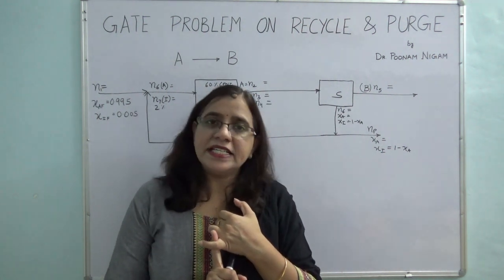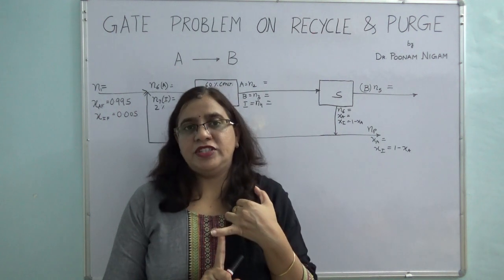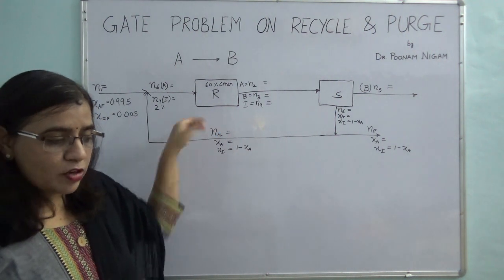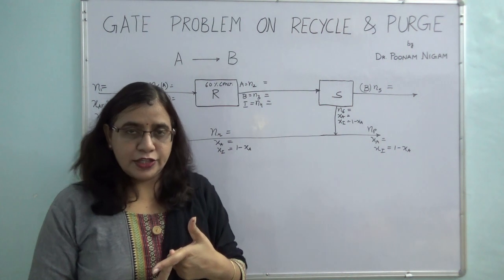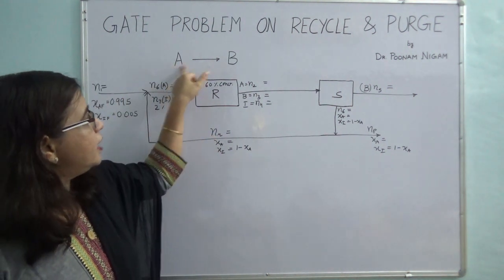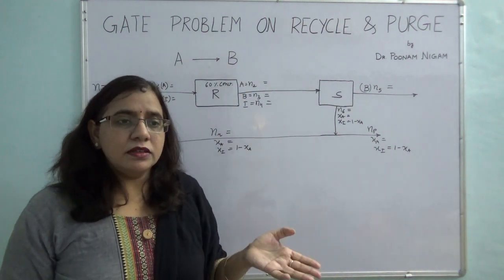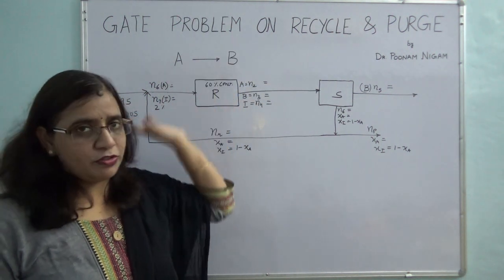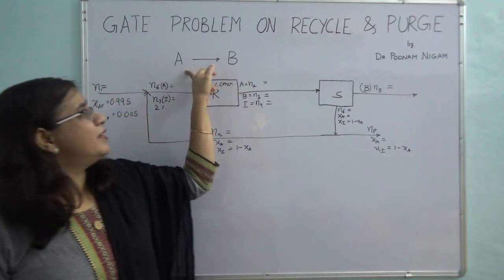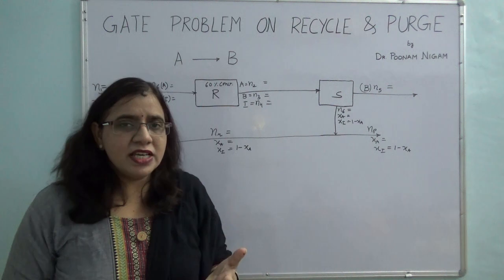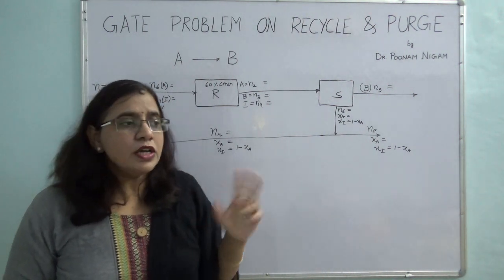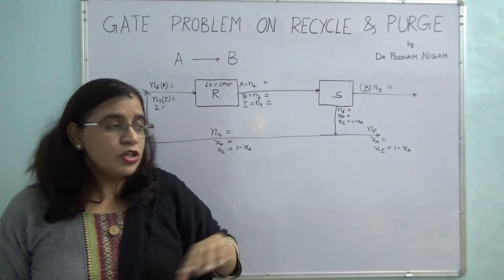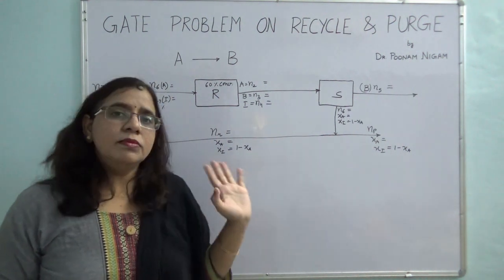Let's start first by making a decision about what type of balance to take. Since a reaction is taking place, you might think of atomic species balance or extent of reaction. Atomic species balance cannot be used here because A goes to B and I do not have the chemical formula of A or B. If I go for extent of reaction, there is only one reaction involving two components — so how much A is consumed, that much B is produced. So this problem I am going to solve using molecular species balance.